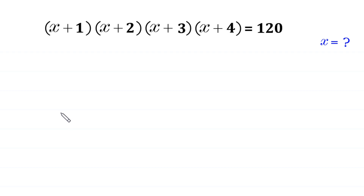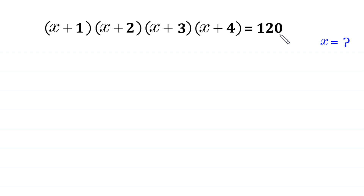Hello, welcome to how to solve this very nice algebra equation: (x+1)(x+2)(x+3)(x+4) = 120. We need to find all possible values of x.